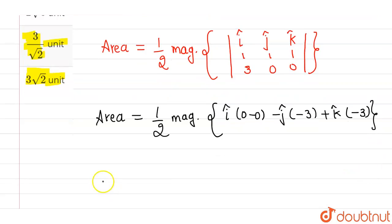Now further if I simplify this then I will be getting area equal to half into magnitude of 0i cap plus 3j cap minus 3k cap.